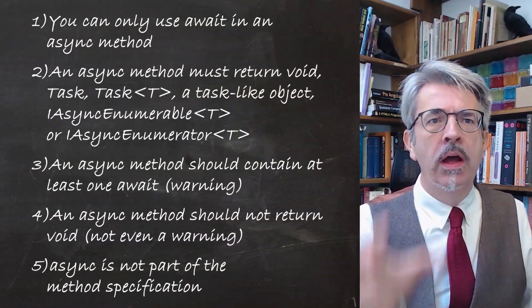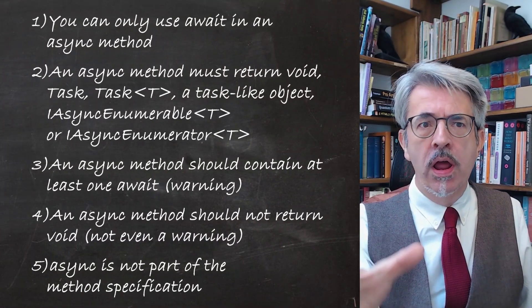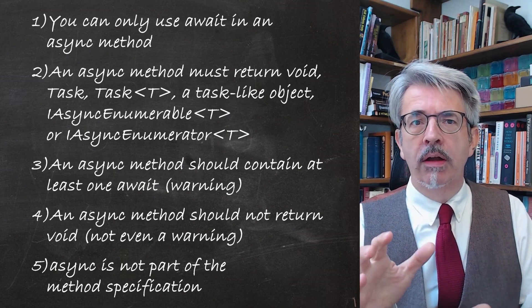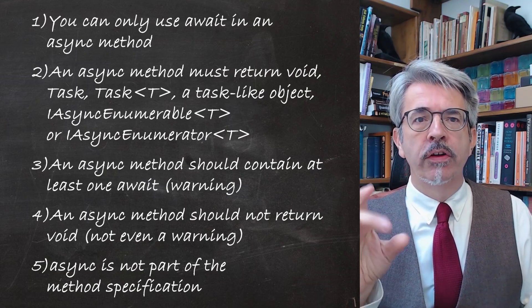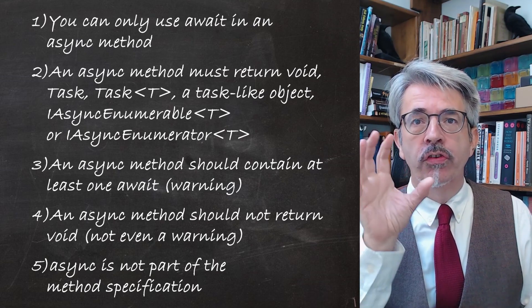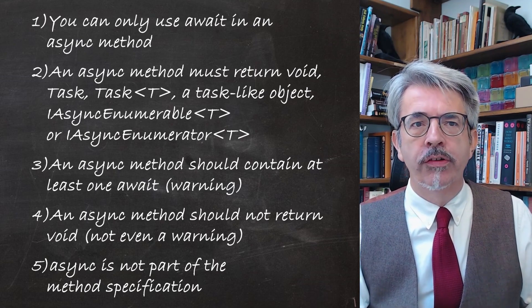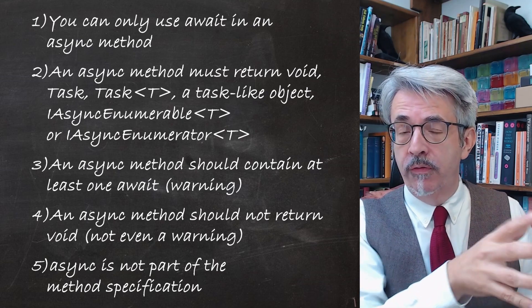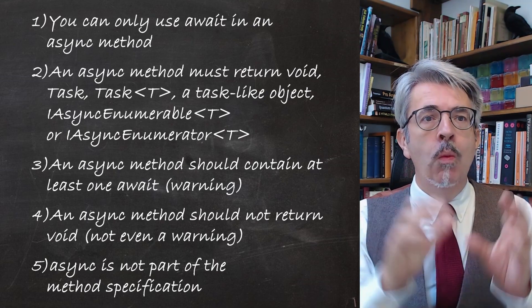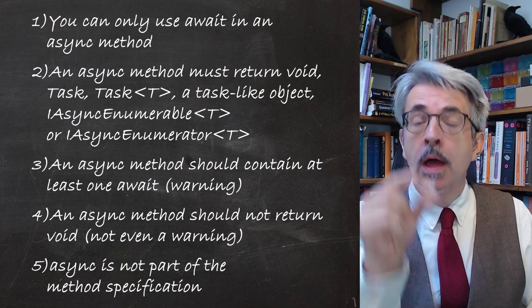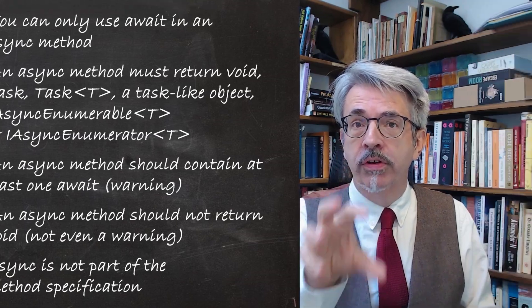Last time we were looking at some ideas relating to async, await, and tasks, and we came up with five statements that help us understand what's going on. Those were: you can only use await inside an async function; an async function must return void, Task, Task<T>, a task-like type, IAsyncEnumerable, or IAsyncEnumerator; an async function should contain at least one await; an async function should not return void; and async is not part of the function specification. The bit we didn't look into last time was that slight contradiction between statement two and statement four — where we say an async function is allowed to return void, but we say you should not return void as good practice. So what we want to do is look at why that is.